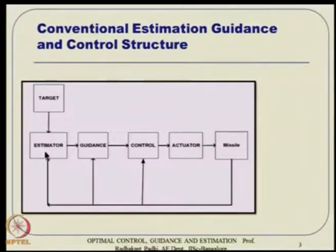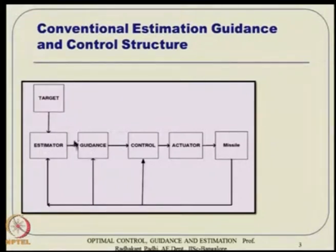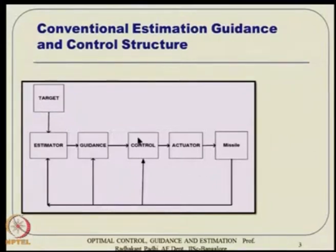When you talk about missile guidance and control, we also need some information about the target. That target information is typically captured either through radar or seeker. We have a target estimation loop, which also talks about missile guidance position and velocity vector. The relative error between the target and missile gets estimated and fed to the guidance.